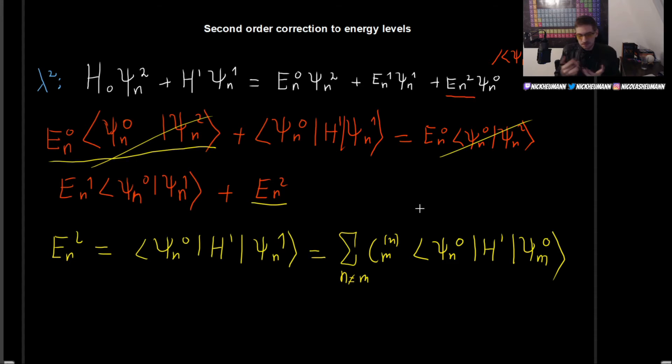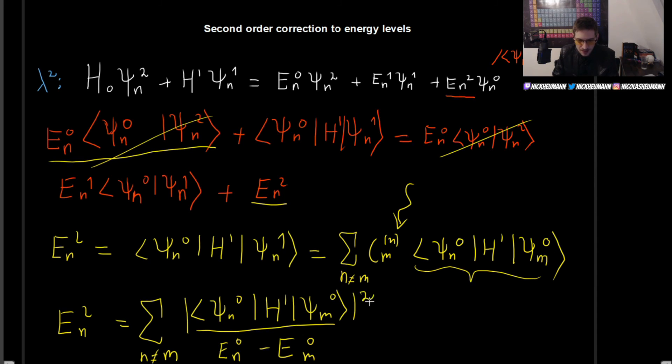And this is, in principle, correct and done. But it's better if we also replace the expression that we found for the coefficients that we found in the previous video. So let's just put them in there. So this is going to be the sum of n different from m. And what was this expression? This expression actually was precisely the same than what we have right here, but divided by the differences in the energies. So it was Psi_n^0, H prime Psi_m^0, divided by E_n^0 minus E_m^0. And this is now multiplied by this part right here. So we can just write it as this squared. And this is the expression for the second order correction to the energy levels in non-degenerate time independent perturbation theory.